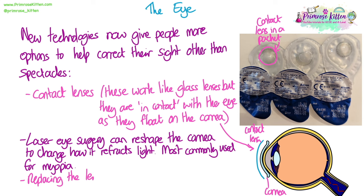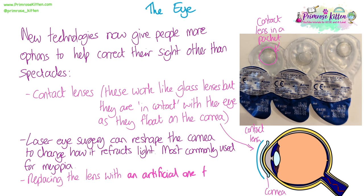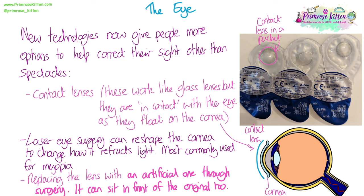You can also have laser eye surgery, which uses a laser to reshape the cornea. By changing the curvature of the cornea, it changes how it refracts the light. It's most commonly used for myopia but can be used for some cases of hyperopia depending on severity. You can also replace the lens with an artificial one through a small surgery — either completely replacing it or placing one in front of the existing lens — to change the ability to refract the light.